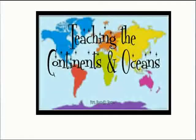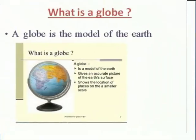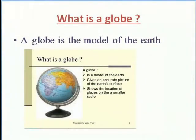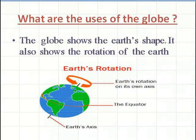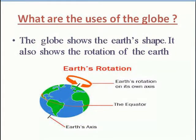Units 1 Lesson 2 continues on continents and oceans. What is a globe? A globe is the model of the earth. What are the uses of a globe? The globe shows the earth's shape. It also shows the rotation of the earth.